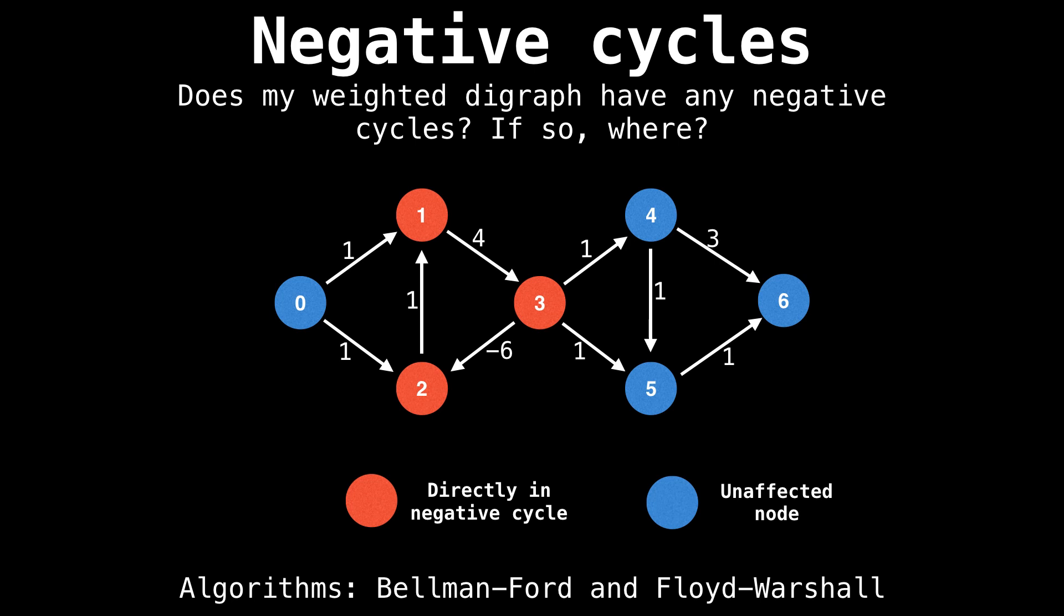However, there are some contexts where negative cycles are beneficial. Suppose we're trading currencies across an exchange or multiple exchanges. Currency prices try to remain consistent throughout the day across exchanges, such as trading USD to euros or Canadian to yen.